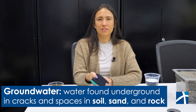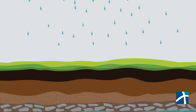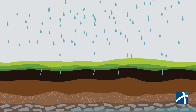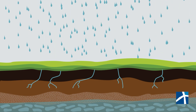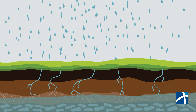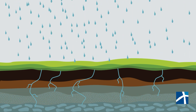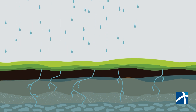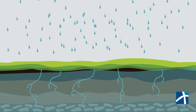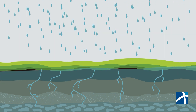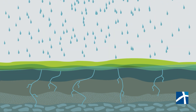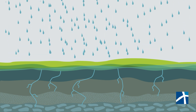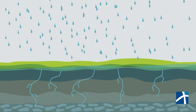However, in some places, groundwater can still reach the surface naturally. This happens in springs, where underground water finds a pathway through cracks in the rock and slowly flows out. It can also happen after heavy rain, when so much water soaks into the ground that the upper layers become fully soaked, forcing extra water to overflow onto the surface, causing flooding.